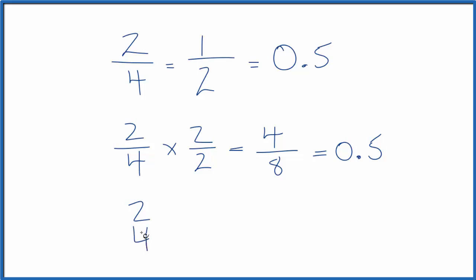Let's take 2 fourths and multiply that by 7 over 7. 2 times 7 is 14. 4 times 7, that's 28. And again, this is an equivalent fraction to 1 half. If you divide 14 by 28, you get 0.5.